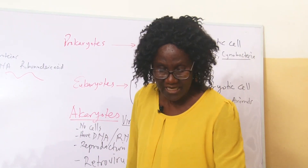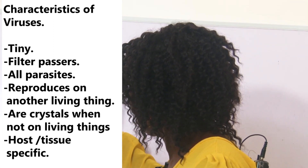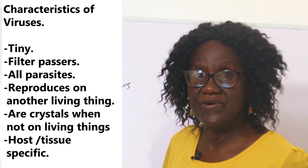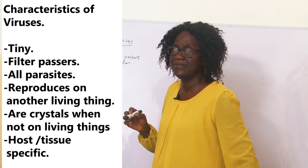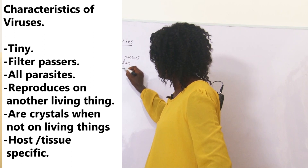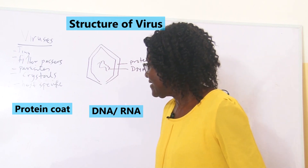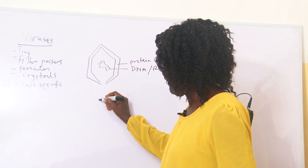Now let's look at the structure of viruses. Viruses are very, very tiny — much, much smaller than bacteria. They are filter-passers because they can pass through filter paper which traps bacteria. They are all parasites. They behave as living things only when they are reproducing on another living thing. Outside a living thing, they become like crystals. They are host-specific, meaning different viruses have different hosts and are even tissue-specific. The bacteriophage is a virus that attacks bacteria, and we will use it as our example.